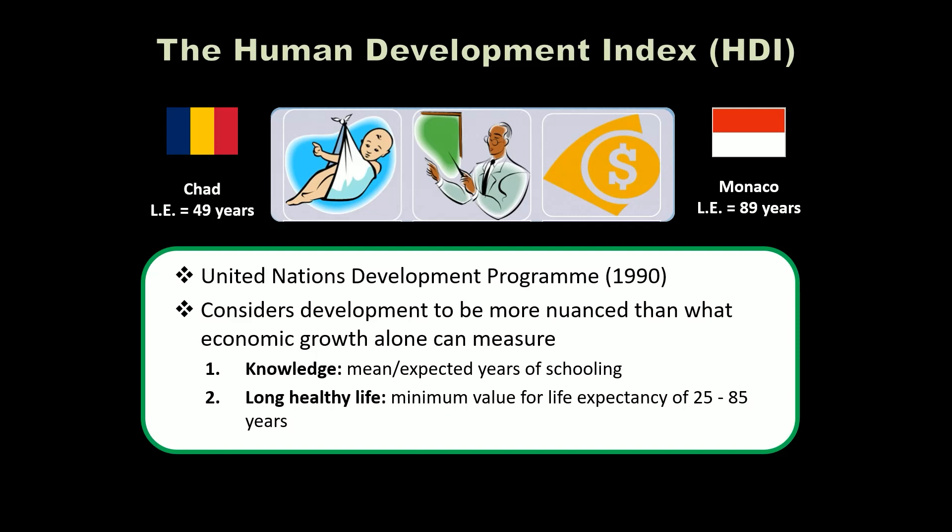Throughout this unit I've been using the terms less developed country, moderately developed country, and highly developed country without fully defining them. There are a couple of ways to evaluate an economy. One is to look at GDP — the overall amount of profits from all economic activity in a country — but that's not very nuanced. The United Nations approach is the Human Development Index, or HDI, which considers multiple factors.